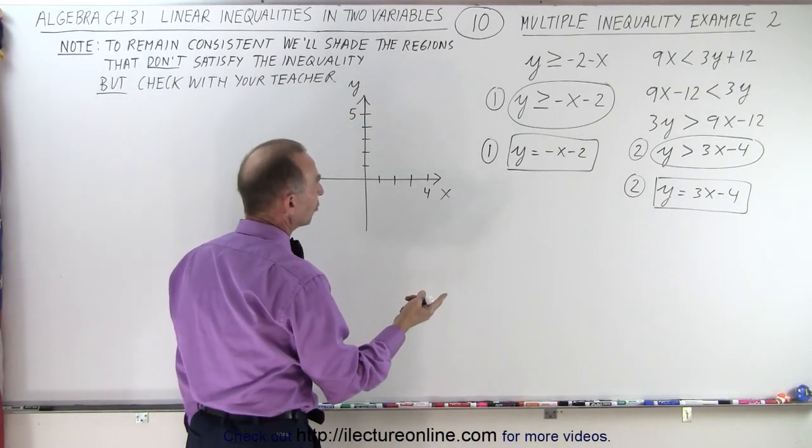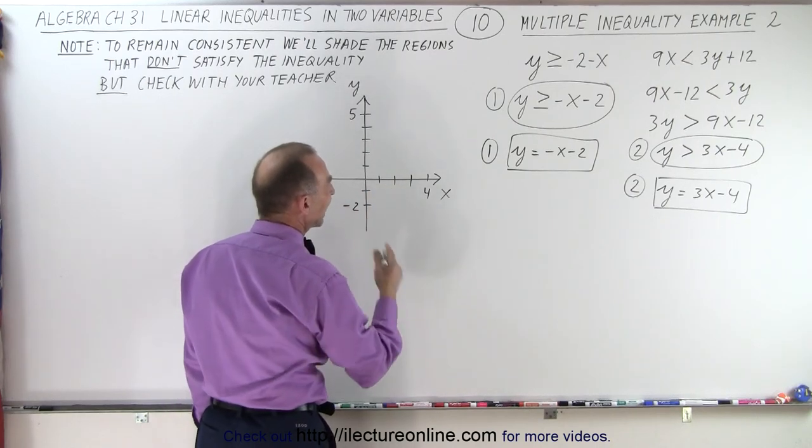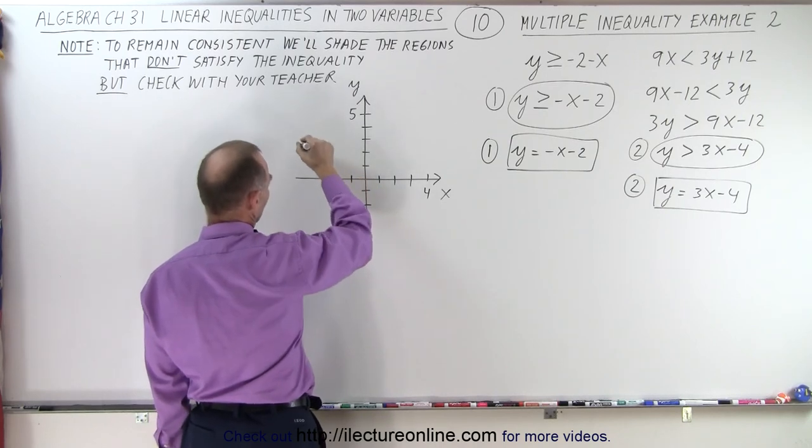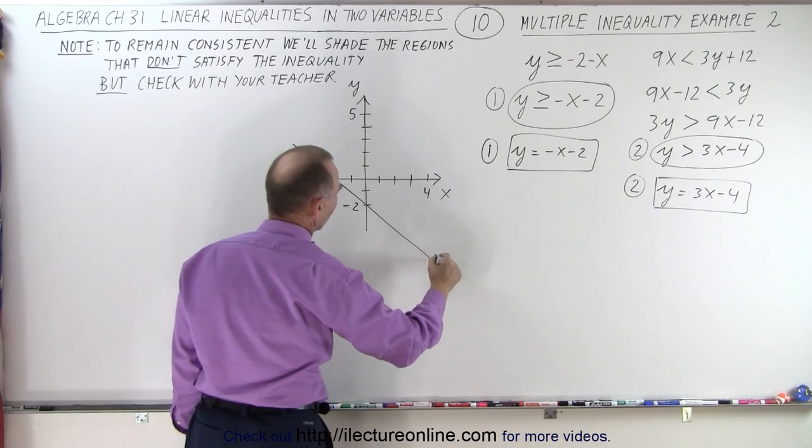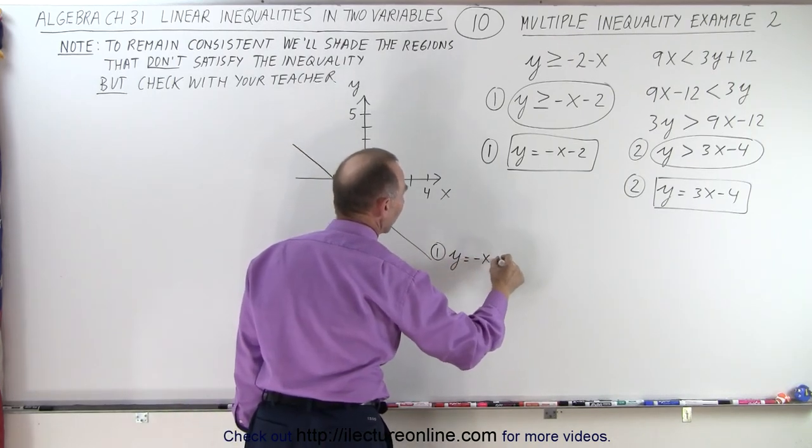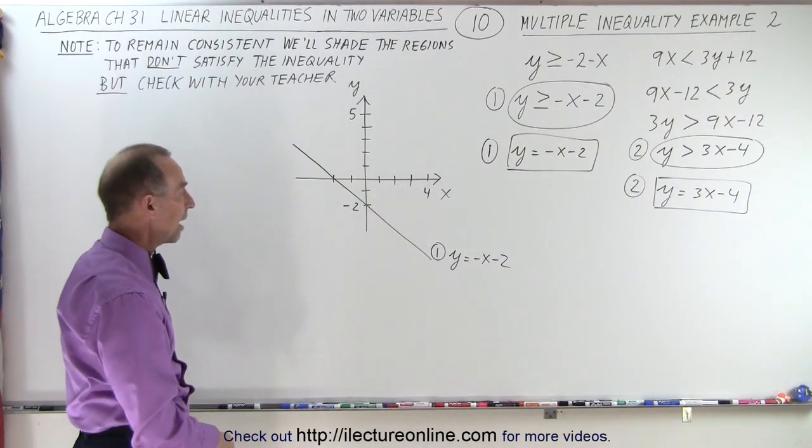The first equation, the intercept is at -2, and the slope is negative 1. So that looks like something like this. It's a solid line, and this is equation number 1, so we have y = -x - 2. It's always good to label, sometimes even to write the equation right there on the graph.